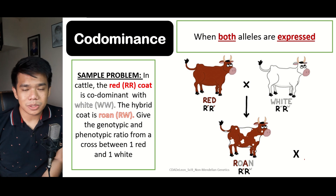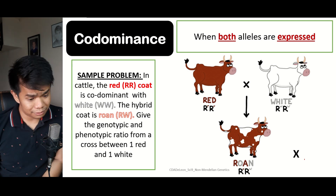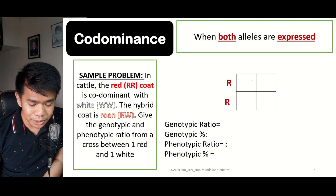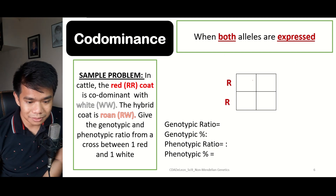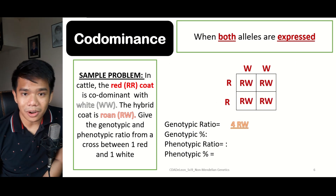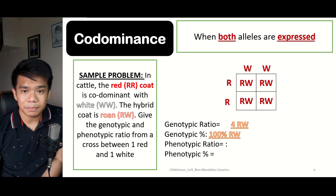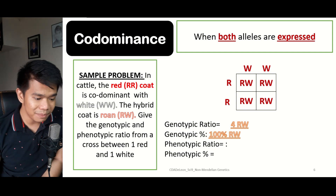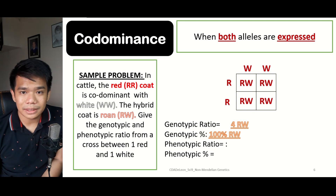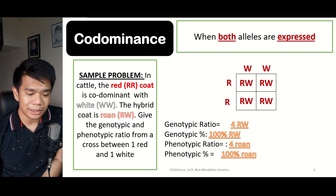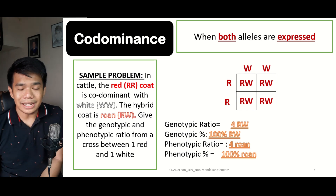What will happen if there is a cross between one red and one white cattle? Looking at the Punnett square, we have RR and WW. The result is four RW's, representing 100%. As mentioned, RW decodes for the roan-colored cattle, so there is a 100% probability of having roan-colored cattle.